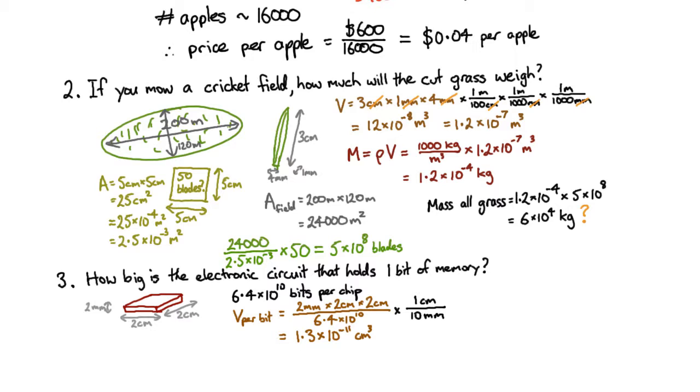And we end up with about 10 to the minus 11 cubic centimeters for a single bit. Now remember that the volume scales as the length cubed, and so if I'm looking for the sort of size of a cube that would have this volume, then I'd have to take the cubic root.